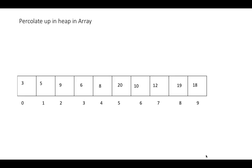Let's try to visualize through animation how the percolate up operation actually works. This is an array, and this array is a min heap array. It satisfies the min heap property where the root element is less than all its children. So, all elements which are roots are less than all their children.